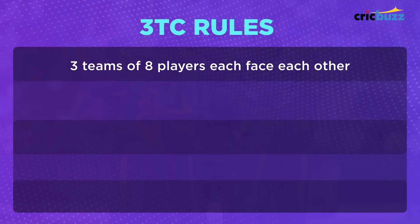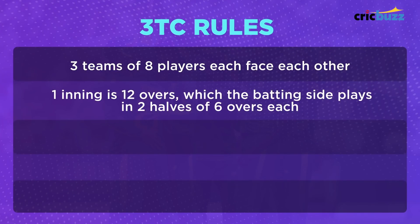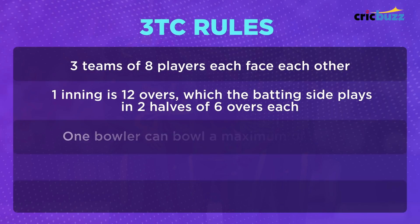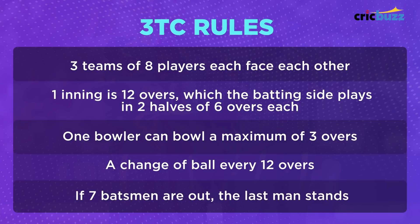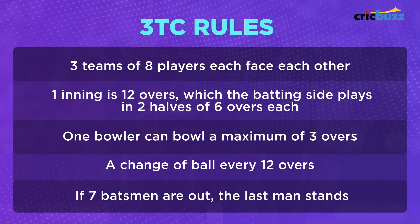Three teams of 8 players each face each other. One inning of 12 overs, which the batting side plays in 2 halves of 6 overs each. One bowler bowls a maximum of 3 overs. A change of ball happens every 12 overs, and if 7 batsmen are out, there's also the rule of last man standing. Beyond the 30-yard circle, 2 runs; 1 tip, 1 hand.